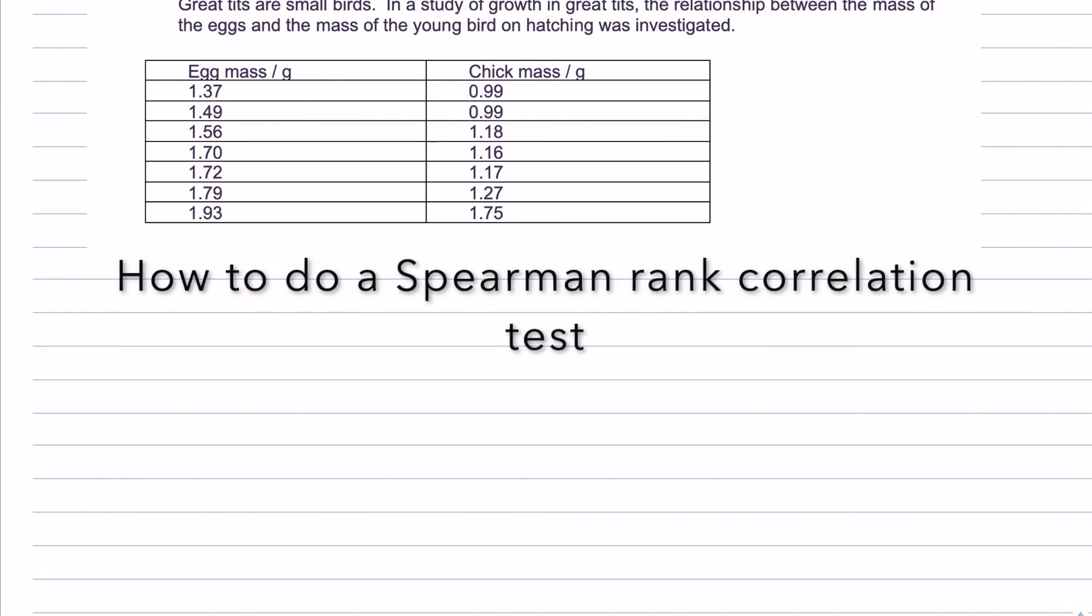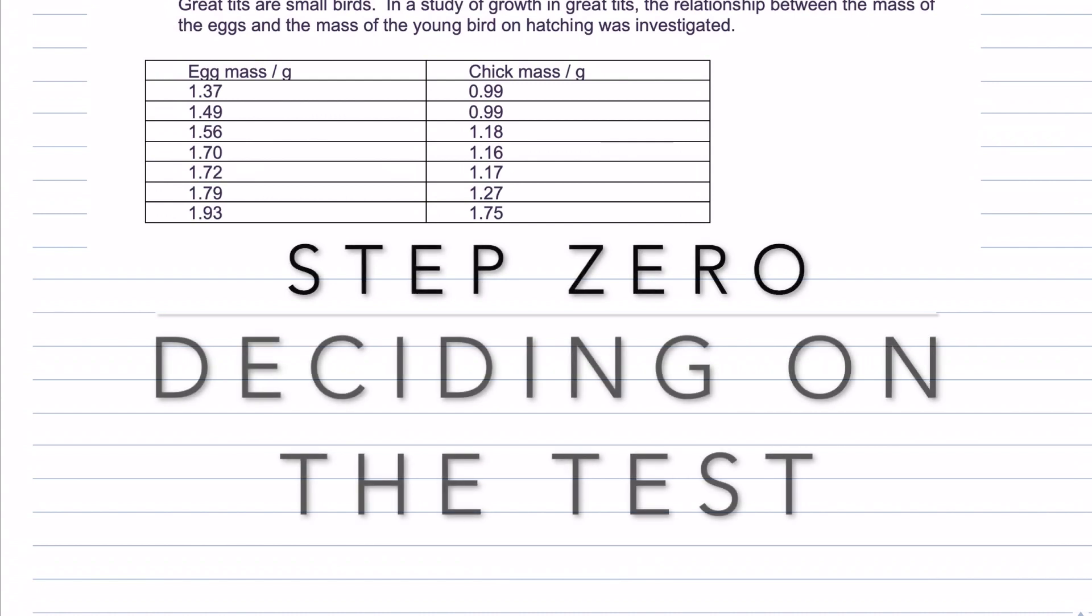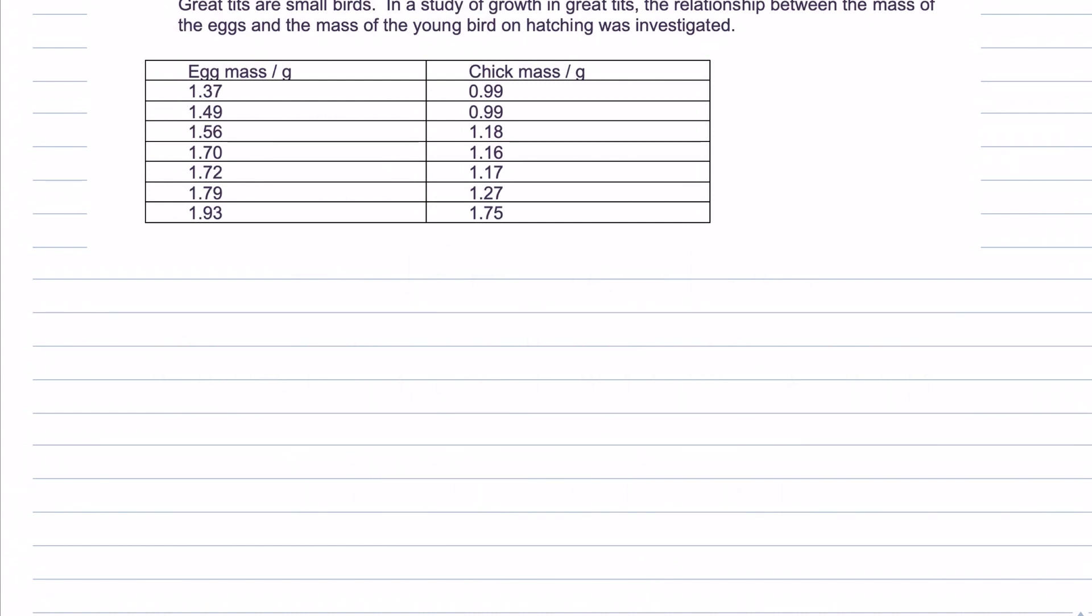We'll be looking at Spearman rank correlation in this video. However, let's look at the data and decide for ourselves the reasons why we have to interrogate this data specifically with the Spearman rank correlation test. Let's read the example. Great tits are small birds. In a study of growth in great tits, the relationship between the mass of the eggs and the mass of the young bird on hatching was investigated.